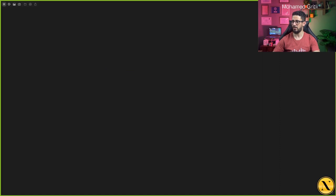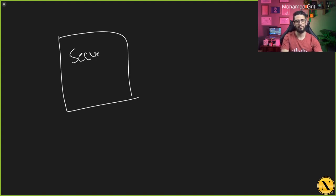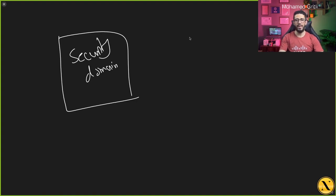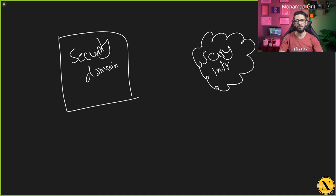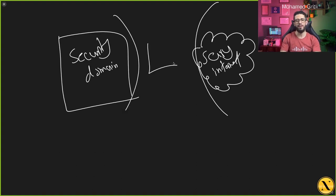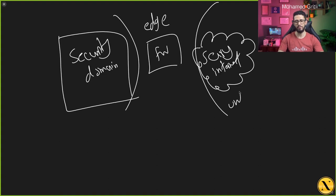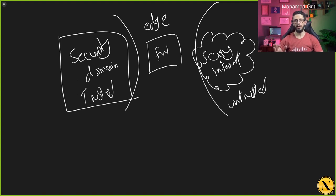The most effective way to provide security to our security domain is by placing a firewall at the boundary or perimeter level — at the edge of our network — to separate the untrusted from the trusted world. Having a firewall will protect company assets from unwanted traffic.